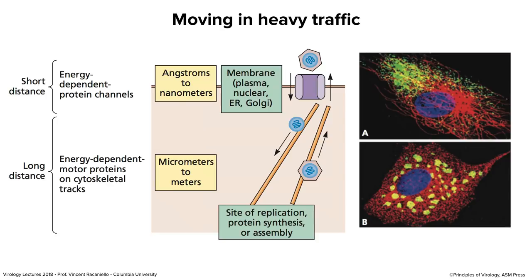In the bottom panel, we've treated the infected cell with a drug called nocodazole, which disrupts microtubules. The red staining shows they're no longer nice filaments — just a mass of protein, all disrupted. The nucleoprotein is hung up in the cytoplasm in clumps and can no longer get to the cell surface. In cells treated with nocodazole, you can't make any infectious virus particles because they can't reach the plasma membrane.